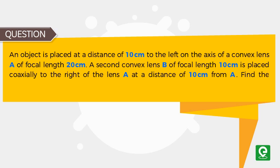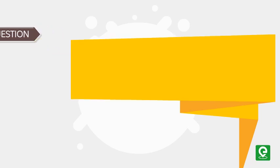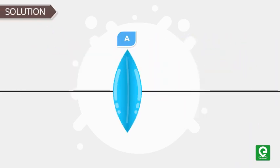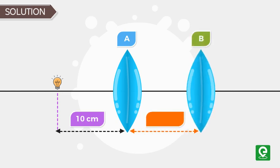Find the position of final image and its magnification and draw the ray diagram. Solution: We are given that there is a convex lens A and an object is placed coaxially on its axis at a distance of 10 centimeters from A. This gives us the position of object. Also to the right side of the lens A, another convex lens B is placed at distance of 10 centimeters from lens A.